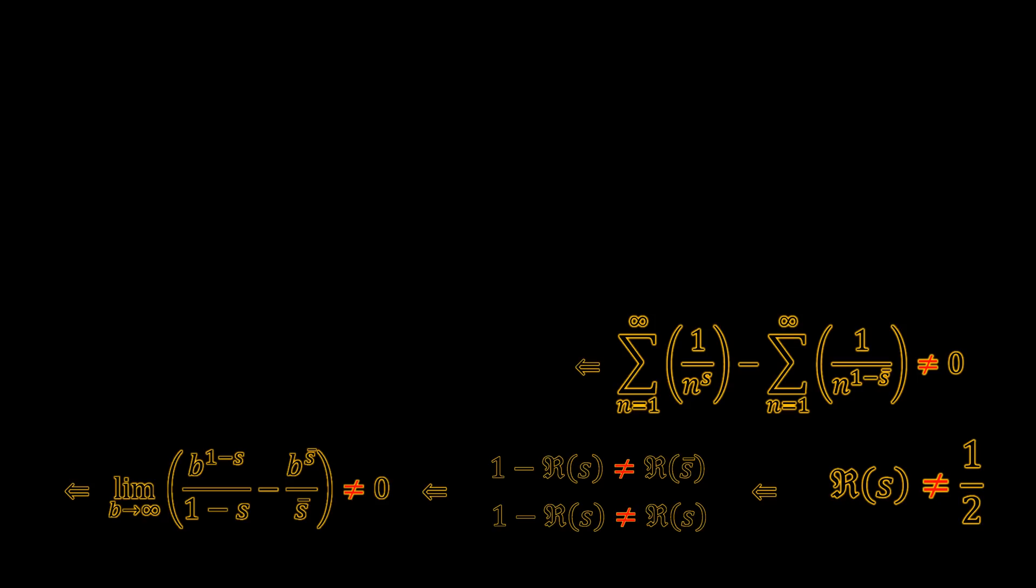Therefore zeta of s minus zeta of one minus s conjugate cannot be zero, which means this.